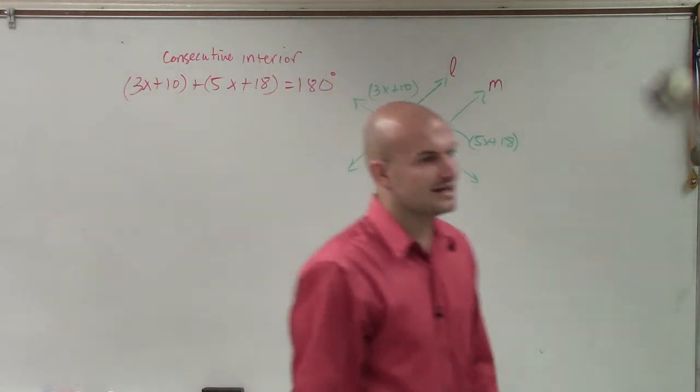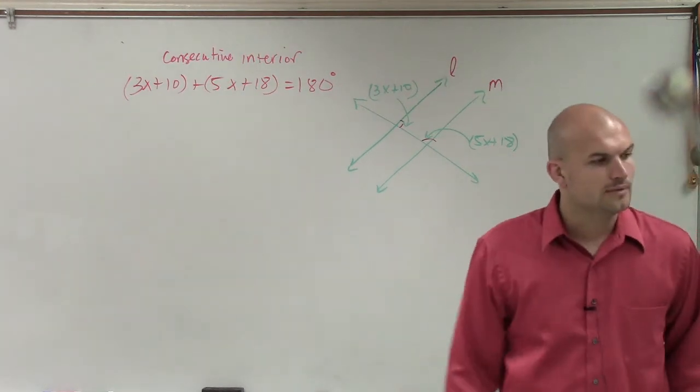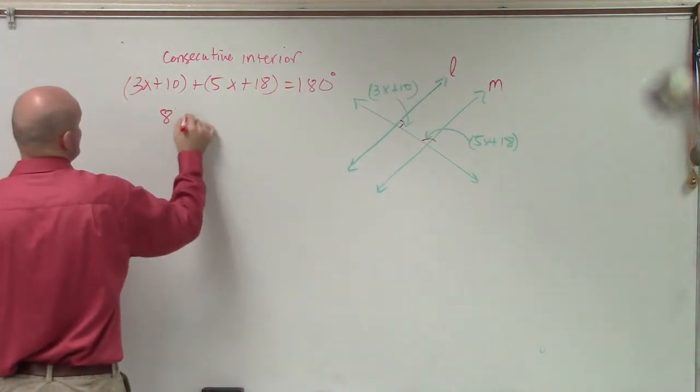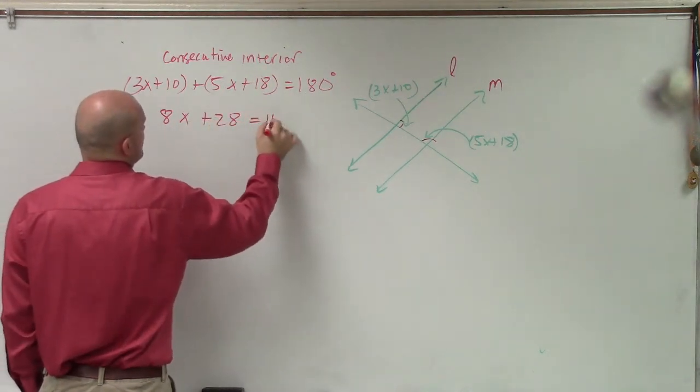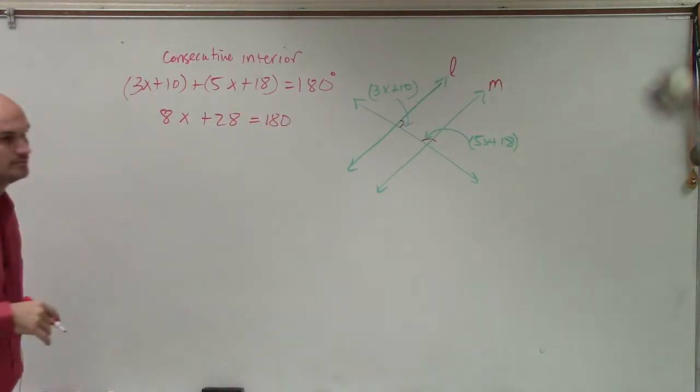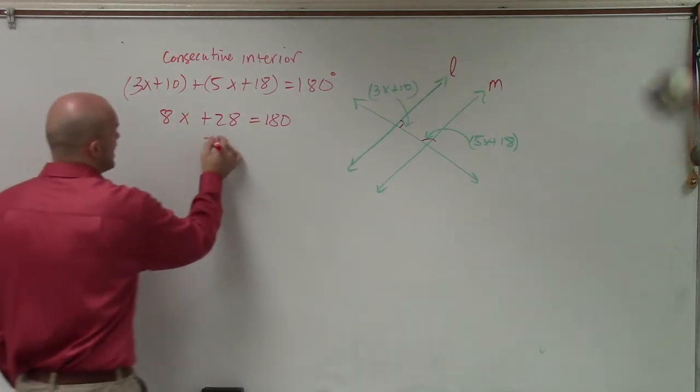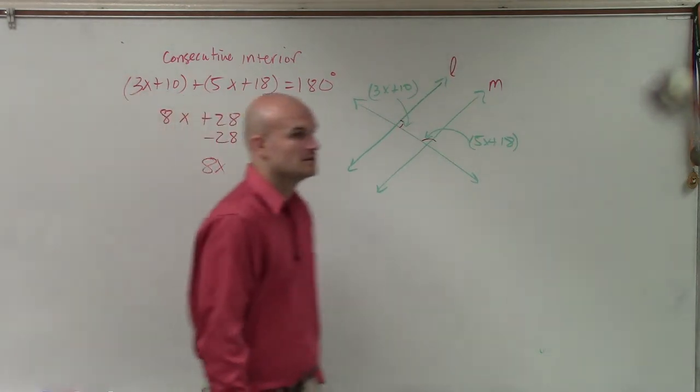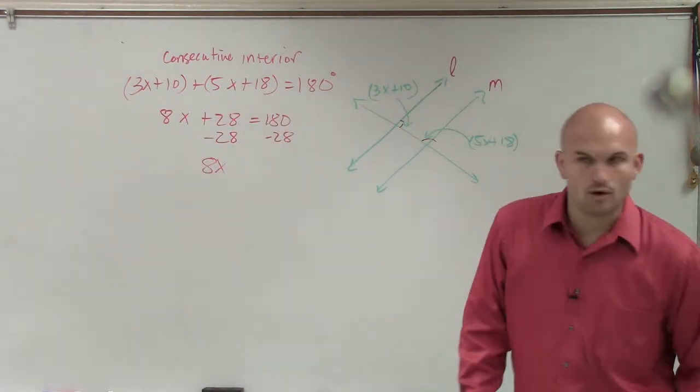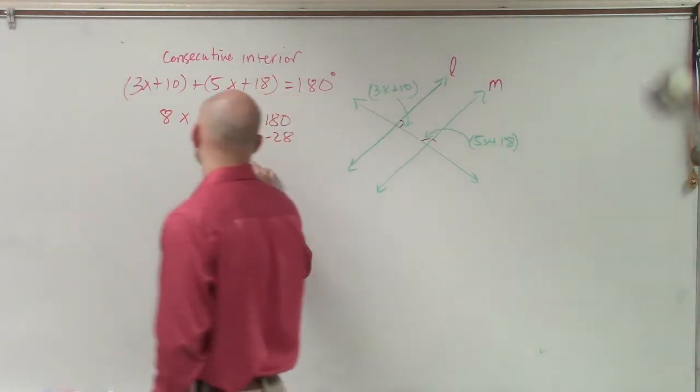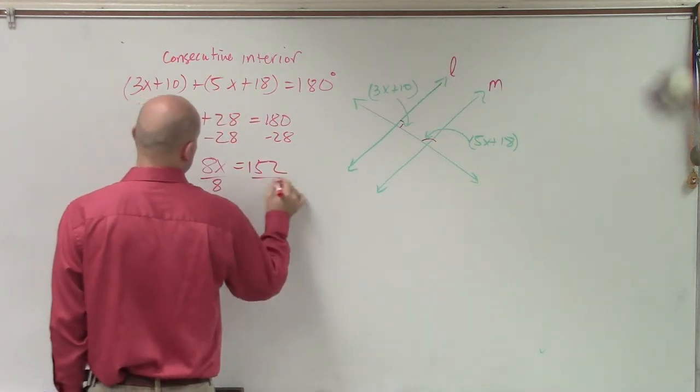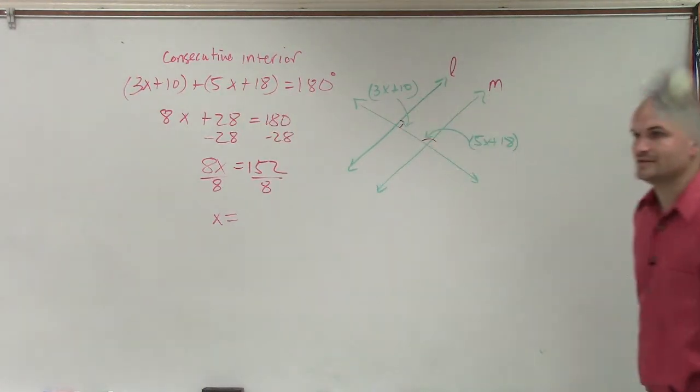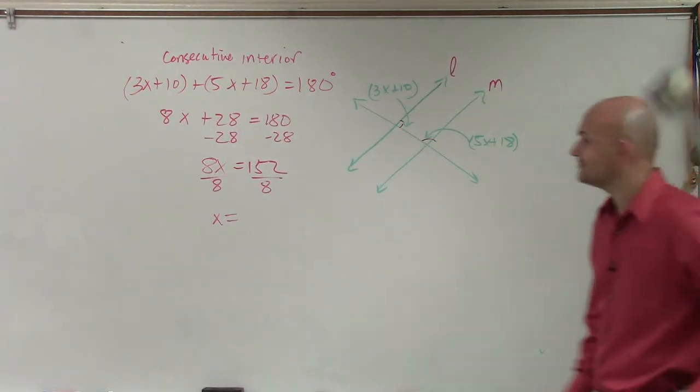OK? So write consecutive interior, right there. And now, let's go and solve. So we can combine like terms. Therefore, I get 8x plus 28 equals 180. Then I can subtract. So I get 8x is going to equal 152. Then I divide by 8, divided by 8, x equals 152 divided by 8, 19. Very good.